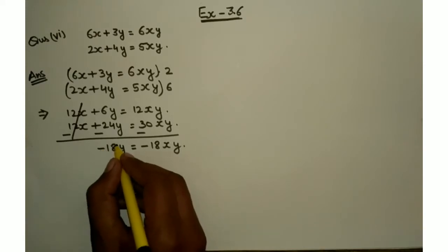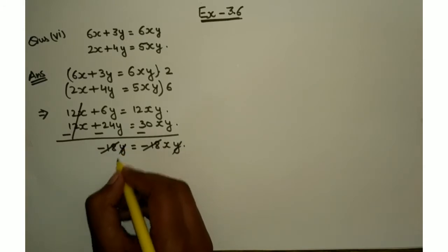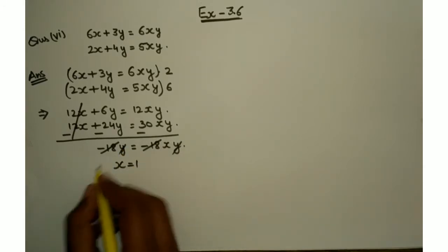Here we can see, minus 18y cancels out, y cancels out. So x cancels to give us x equals 1.